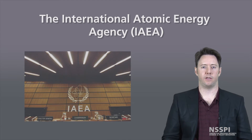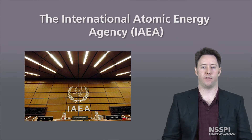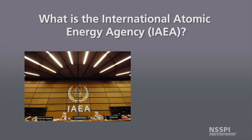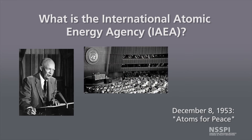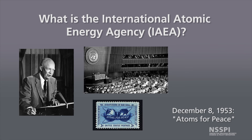In this section we are going to discuss the International Atomic Energy Agency, the IAEA. To understand what it is, first we have to go back to December 8th, 1953, when US President Eisenhower gave his famous Atoms for Peace address to the UN General Assembly. In this address he talked about promoting the benefits of civilian nuclear power throughout the world through the Atoms for Peace initiative.